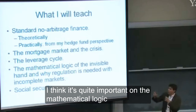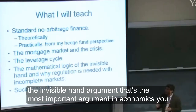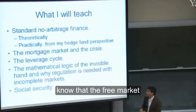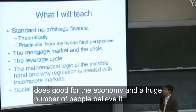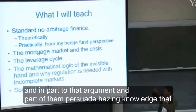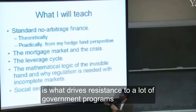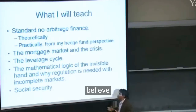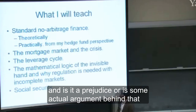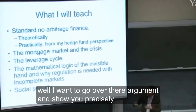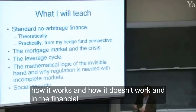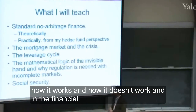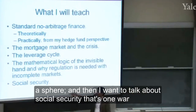I'll also spend some time on the mathematical logic of the invisible hand argument. That's the most important argument in economics — that the free market does good for the economy. A huge number of people believe it, and part of that hazy knowledge of the argument is what drives resistance to a lot of government programs. The idea that the government can only screw things up — is that a prejudice, or is there some actual argument behind that? I want to go over that argument precisely, showing how it works and how it doesn't work in the financial sphere.